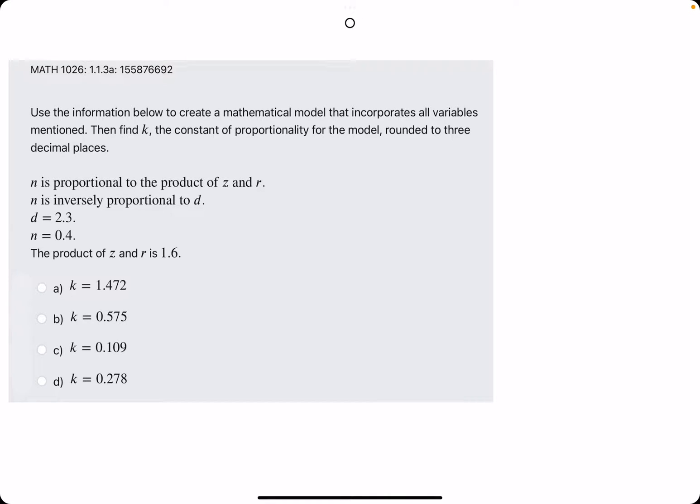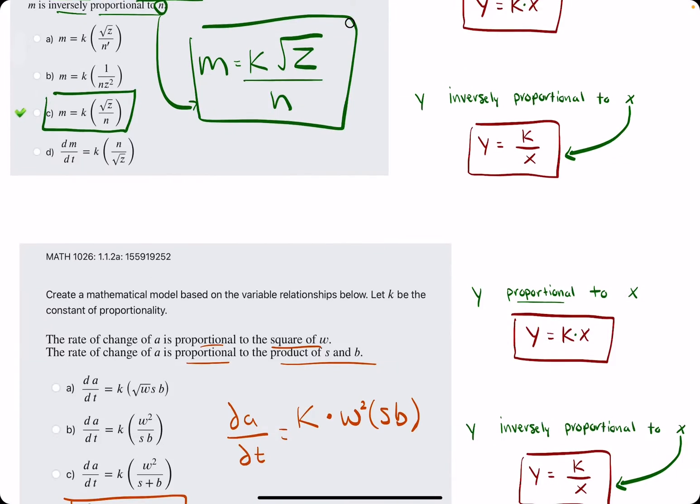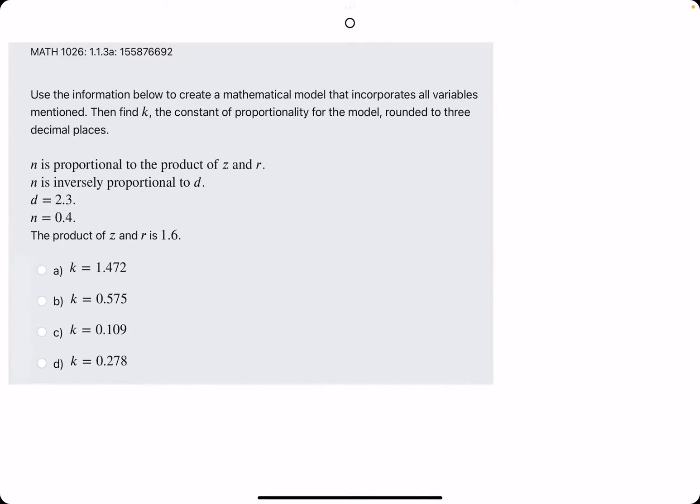Okie dokie, in this problem, they give us the same information we saw back in 1.12a, so what we'll do is use that information to set up an equation. They say that n is proportional to the product of z and r.